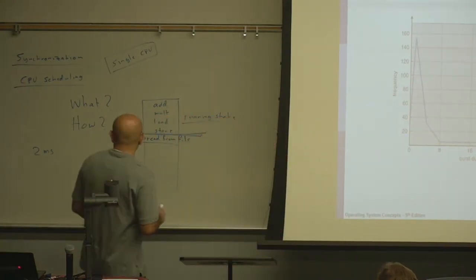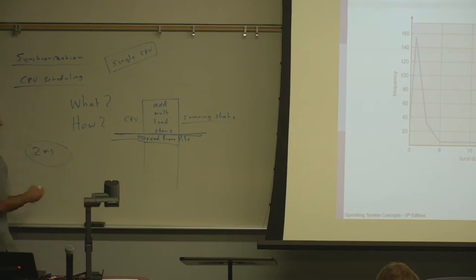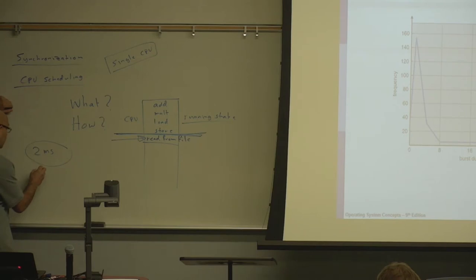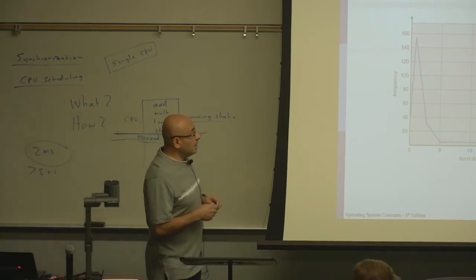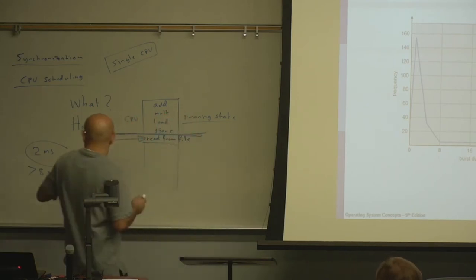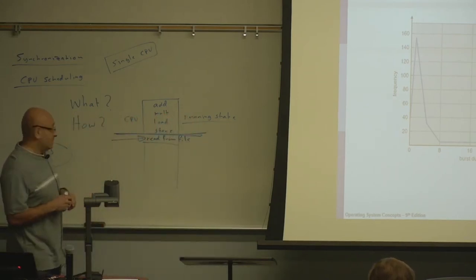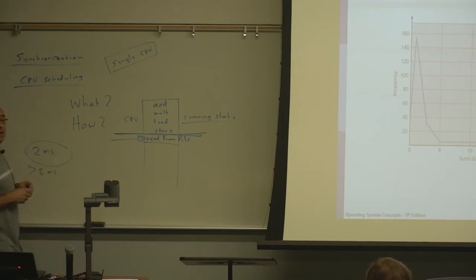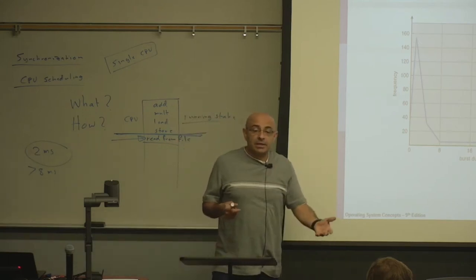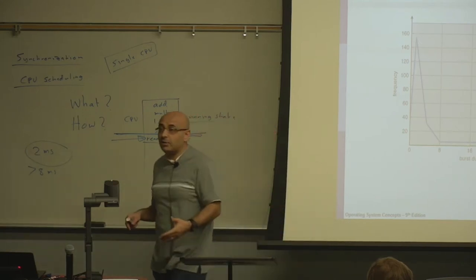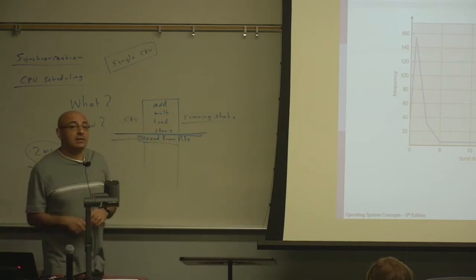Why are CPU bursts longer than eight milliseconds rare? It's very unusual for a process to go eight milliseconds without IO. IO is reading from input, reading from keyboard, writing to the screen, or accessing a file. Can you imagine a process going for two milliseconds without any IO?